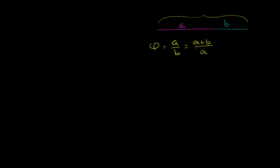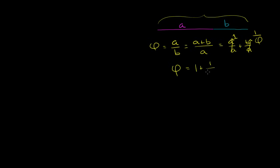If phi is equal to a over b, which is equal to a plus b over a, we know that a plus b over a is the same thing as a over a plus b over a. A over a is just 1, and b over a is just the inverse of phi, so b over a is going to be 1 over phi. So phi is equal to 1 plus 1 over phi.